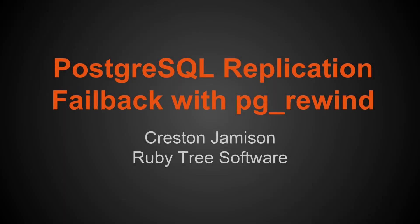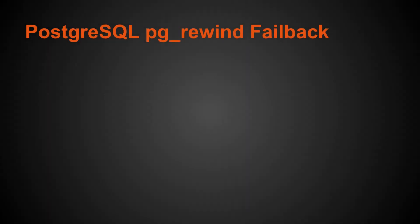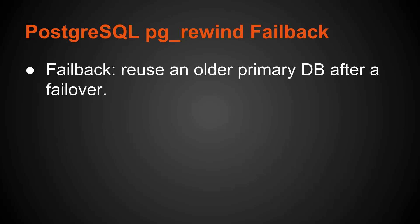Let's talk about PostgreSQL replication failback with PG Rewind. By failback I mean you want to reuse an older primary database after you have done a failover. You have a primary database and a replica, you promote that replica so you fail over to it, but now you want to re-establish that old primary and bring it up as a replica of the new primary. Essentially we're calling that failing back to the old primary.